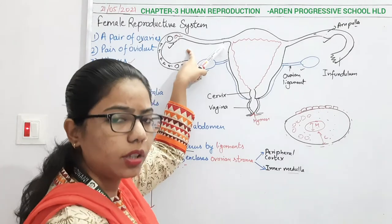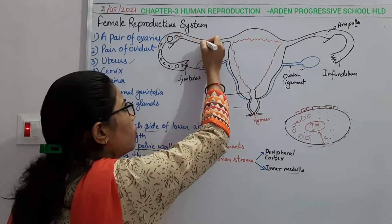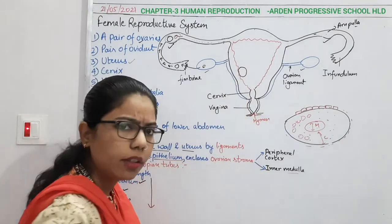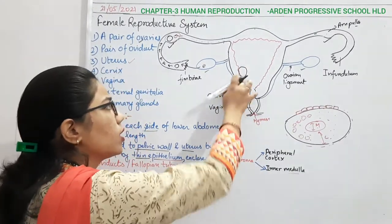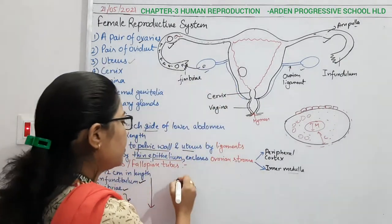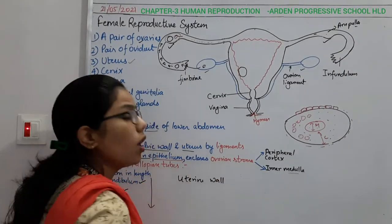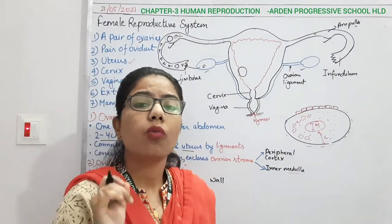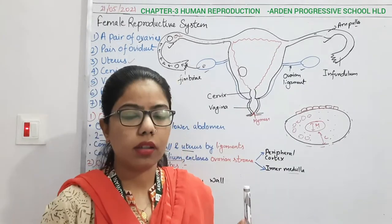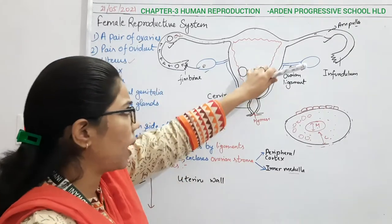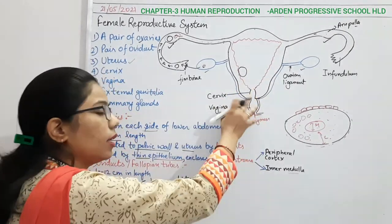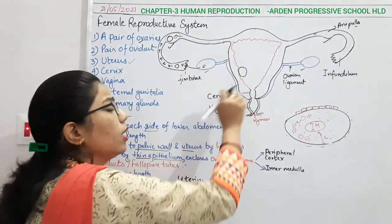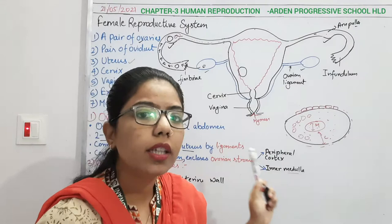Now we will move to the uterus. Once fertilization is completed, the zygote will move forward and reach the uterine wall. The whole part known as the uterus — in your NCERT it is given that the shape of the uterus is just like an inverted pear. The uterus has three different layers.